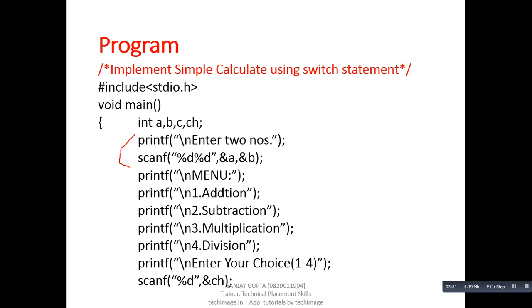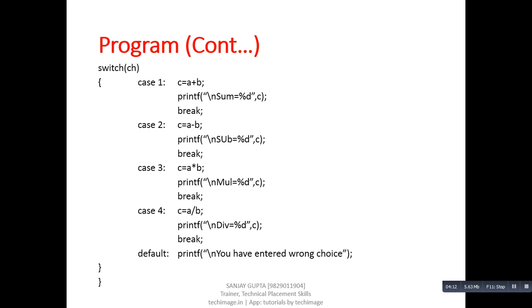Following these statements, we have several printf statements which show addition, subtraction, multiplication, and division. So we are going to ask for a particular choice from the user, and the user will have to enter a choice between one to four. Then the entered choice will be passed into the switch statement. There are total four cases: case one is performing addition, case two is performing subtraction, case three is performing multiplication, and case four is performing division operation.